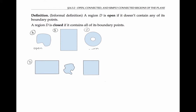Region D is not open because it contains its boundary points. In fact, it contains all of its boundary points. That's what the solid line signifies — that edge is part of the region. Since it contains all of its boundary points, it's in fact a closed region.